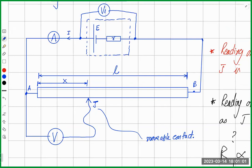When I am changing length x, what is happening to the resistance of the wire from A to J? We discussed that resistance depends on length of the conductor — if you increase length, resistance increases. So as I move J away from A, x increases, meaning the resistance of the wire between A and J increases. When resistance increases, the potential difference across that segment also increases.